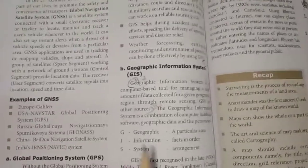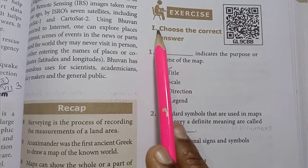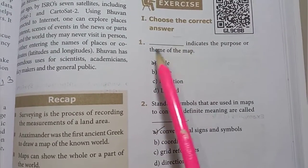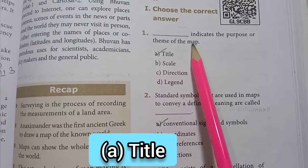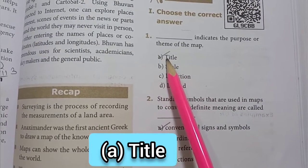Turn to page 227, Roman numeral 1, choose the correct answer. First one: dash indicates the purpose or theme of the map. Answer is A option, title.